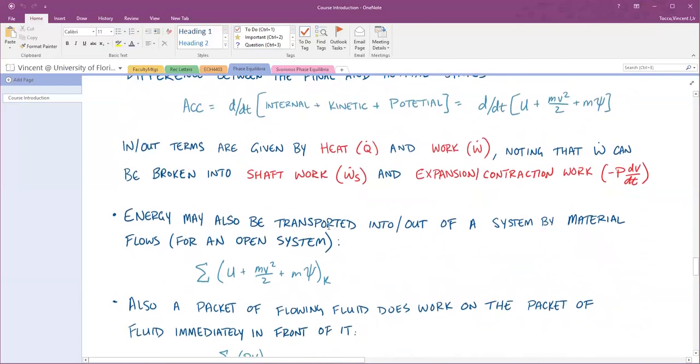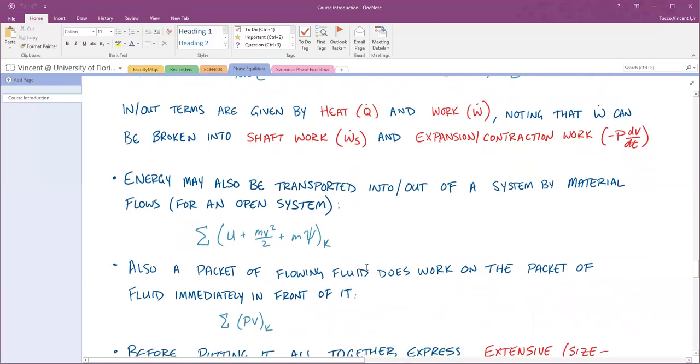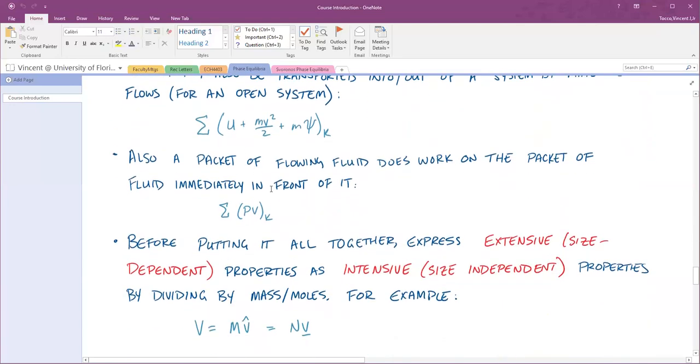If you have an open system, you can transport energy in by a mass flow. If you've got a flow coming into the system, you have to add the internal kinetic and potential energy that is convected into the system by a flow of mass. Then you also have the term for the packet of fluid that flows that does work on the packet of fluid in front of it. That's called PV work. If any of this is unfamiliar, please go back to chapter three in Sandler where energy balances are covered. I'm going through this extremely fast because it should be a review.